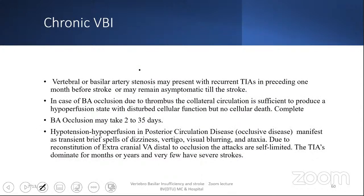Chronic vertebrobasilar insufficiency may be seen with vertebrobasilar artery stenosis presenting with recurrent TIAs in the preceding one month before stroke, or may remain asymptomatic until stroke. In basilar artery occlusion due to thrombus, if collateral circulation is sufficient to produce some hyperperfusion, disturbed cellular function may persist but without cell death. Complete basilar occlusion may take 2 to 35 days, and disturbed cellular function will give rise to symptomatology. Hypotension and hypoperfusion in posterior circulation occlusive disease manifest as transient brief spells of dizziness, vertigo, visual blurring, and ataxia.